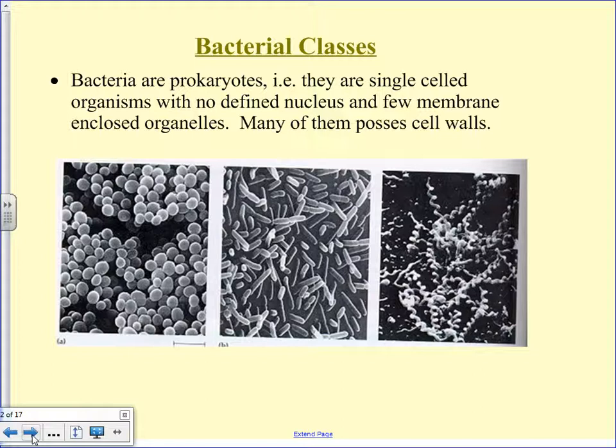Peptidoglycan makes bacteria very difficult for your body to kill off, because the cell wall protects them from the way your body kills bacteria — your killer T cells and leukocytes come in and try to eat them, but the cell wall prevents that. Antibiotics that we take for bad bacterial infections help to break down that cell wall and make it so your immune system can kill them off.